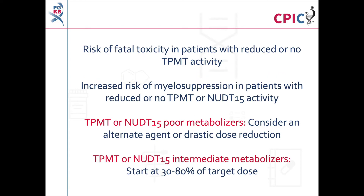Due to the risk of fatal toxicity in TPMT poor metabolizers and the increased risk of myelosuppression in TPMT or NUDT15 poor metabolizers, the guideline recommends the use of alternative therapies or a drastic dose reduction in these patients. A dose reduction is also recommended for TPMT or NUDT15 intermediate metabolizers.